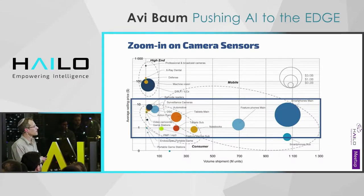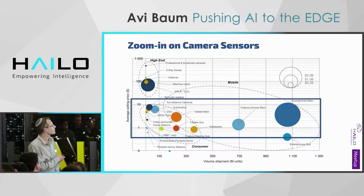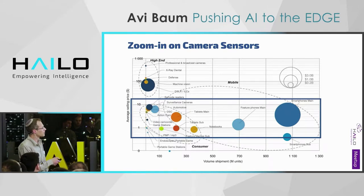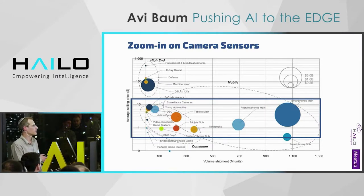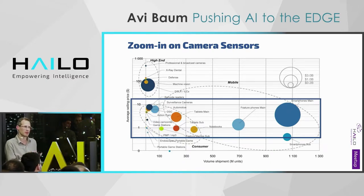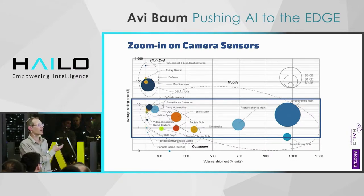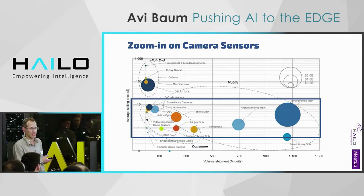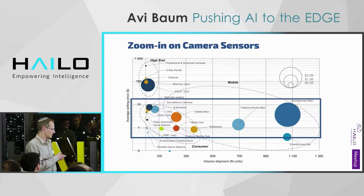Zooming in on camera sensors — this is a snapshot from a research and analyst report for camera sensors, just to justify this number. You can see that most of the volume is sub-$10 today for CMOS camera sensors. This is where we stand with the technology, and it shows why the processing element is so dominant: to allow processing of very high-end sensors, you need something that in cost matches this level, while in capacity matches what is needed to carry out the task. When you talk about machine learning tasks, typical computers today do not stand up to this.